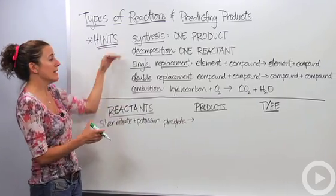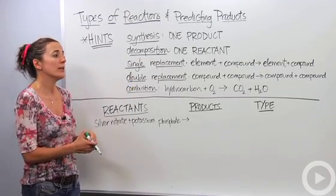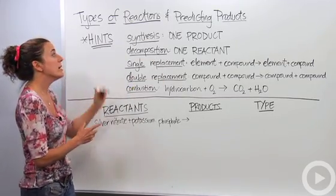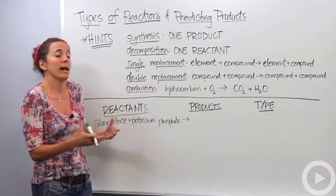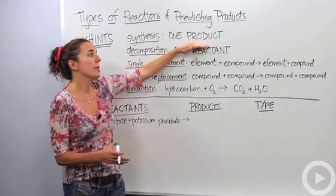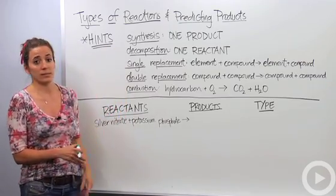I've listed up here all five different types of reactions that you're going to see in class. We have hints on how we can figure out which one is which. So you have synthesis reaction. Synthesis is another way of saying I'm making something, I'm synthesizing something. We're just going to make one product, so any time you see one single product, you know automatically synthesis.